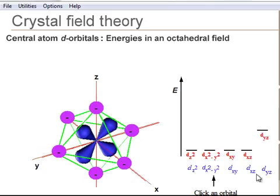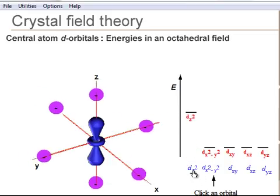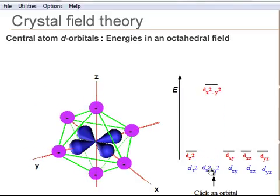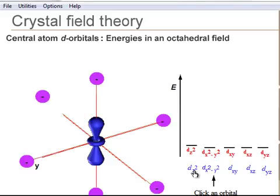When a ligand encounters a lobe of the central atom's d-orbitals, it raises the energy. Hence, the dz-squared and the dx-squared minus y-squared orbitals, which lie along the x, y, and z axes, are raised in energy.